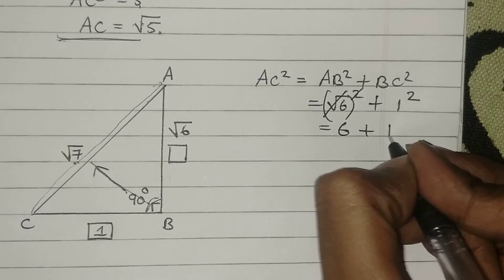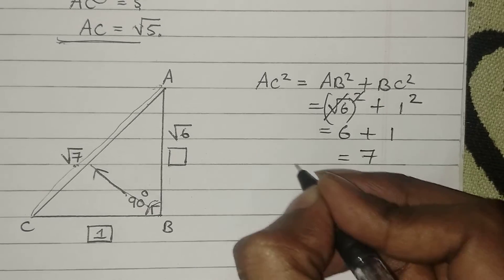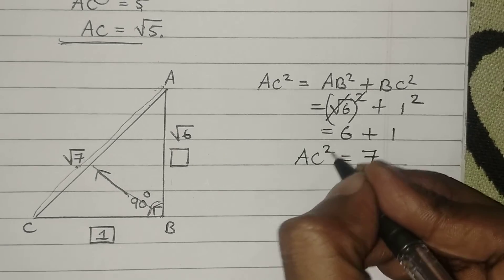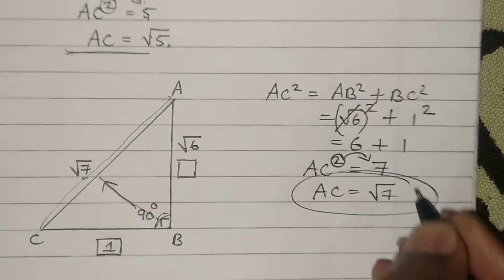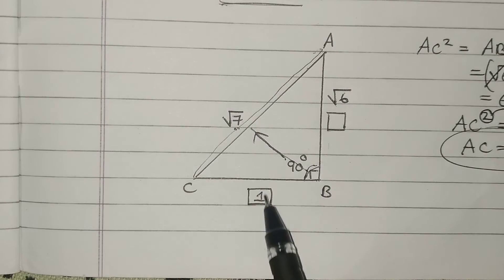So this will become 6 and 1² is 1. 6 + 1 = 7. So we will be getting AC² = 7. When I shift the square to the other side, it will become root 7. Very good, you are on the right path.